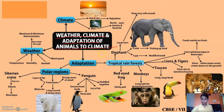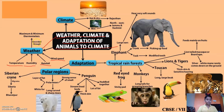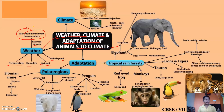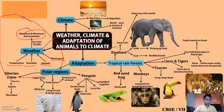First of all, we will learn what is weather. Weather includes temperature, humidity, rainfall as well as wind speed. Weather is recorded through maximum and minimum thermometers. As we learned in chapter 4 on heat, one of the thermometer types is the maximum and minimum thermometer. So weather includes temperature, humidity, rainfall and wind speed, and is recorded through maximum and minimum thermometers.